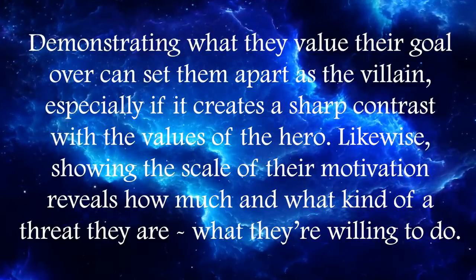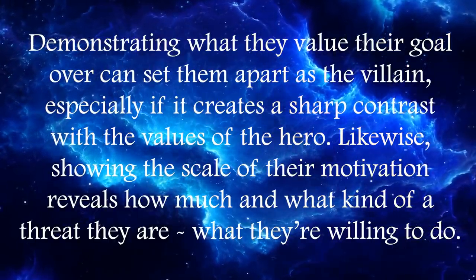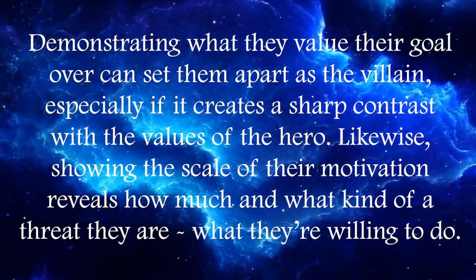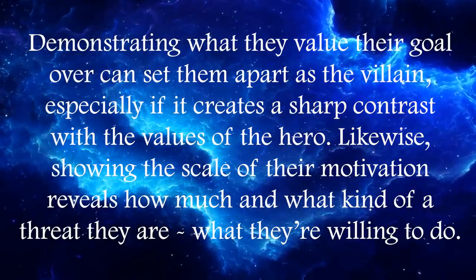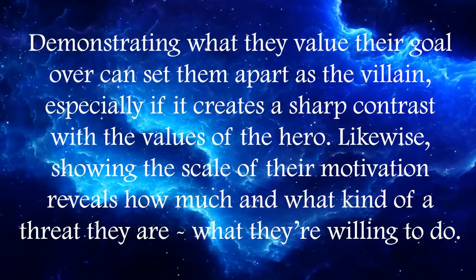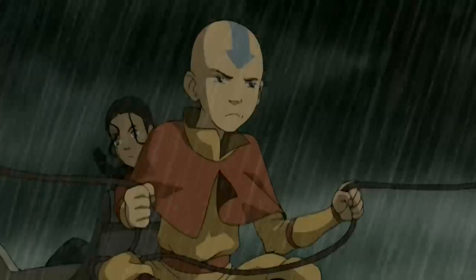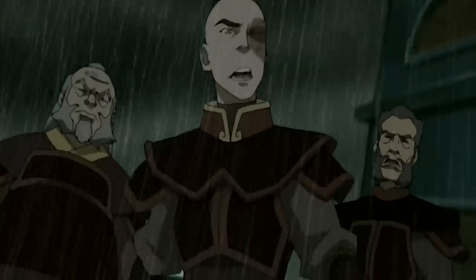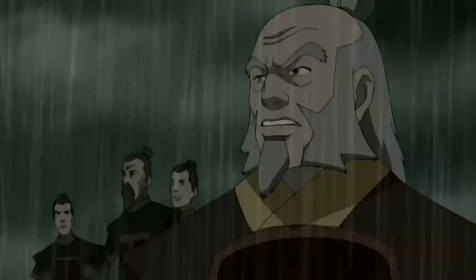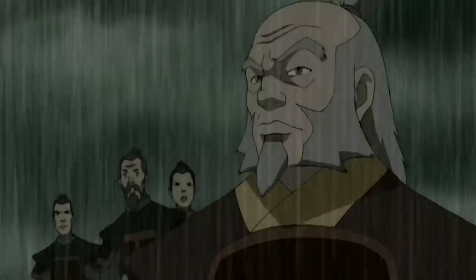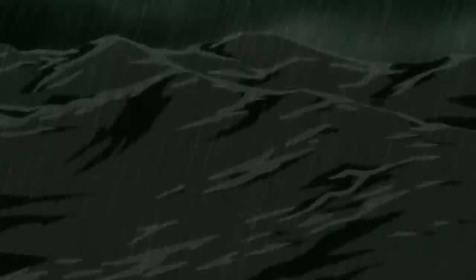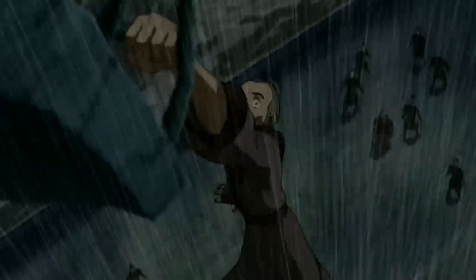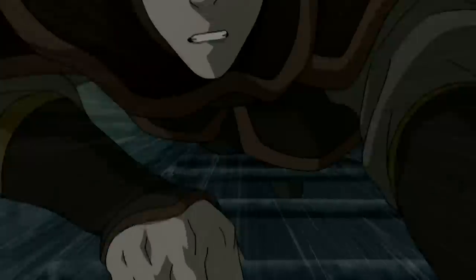Demonstrating what they value their goal over can set them apart as the villain, especially if it creates a sharp contrast with the values of the hero. It's not the worst thing in the world to want to be powerful, unless the author demonstrates that they value power over justice. Showing the scale of their motivation reveals how much and what kind of a threat they are. It can also make a villain more multidimensional by demonstrating something they are not willing to risk — family, friends, or social acceptance. In Avatar: The Last Airbender, we learn that Zuko is unwilling to risk his crew dying in a storm to pursue the Avatar, giving layers to his motives.